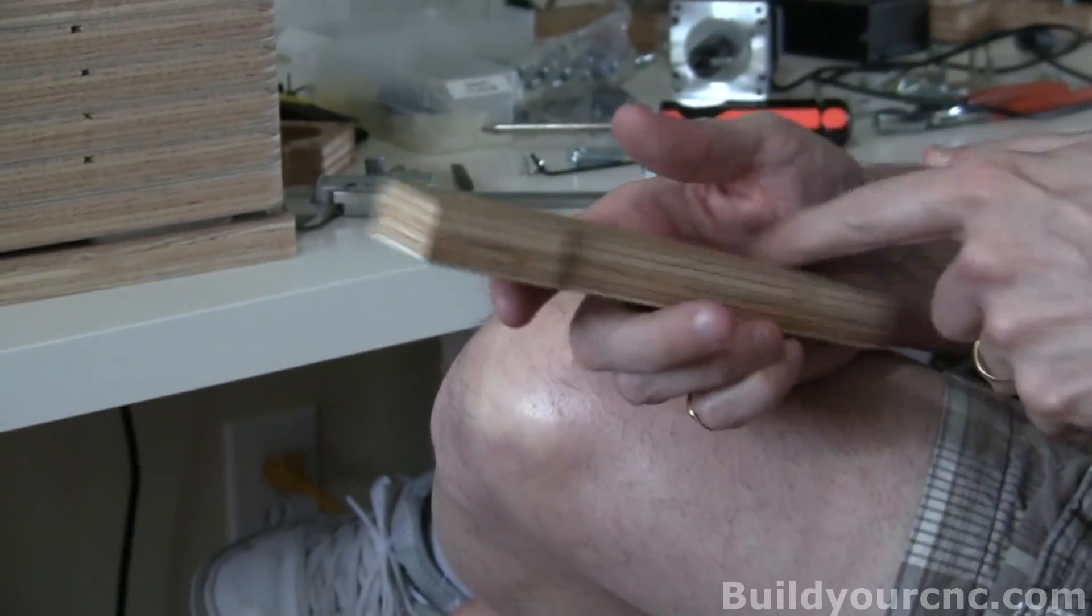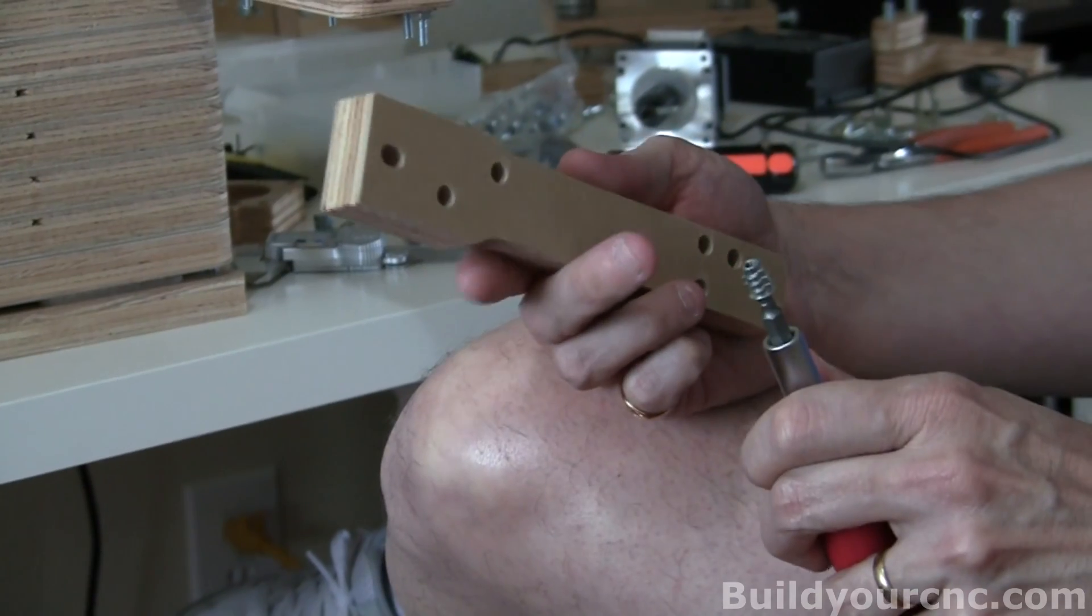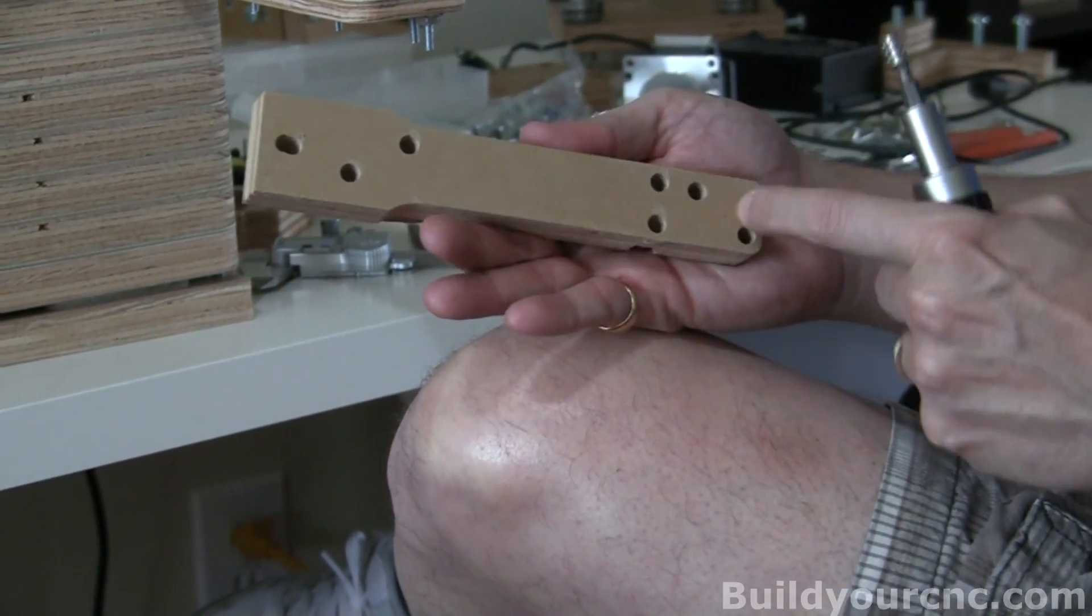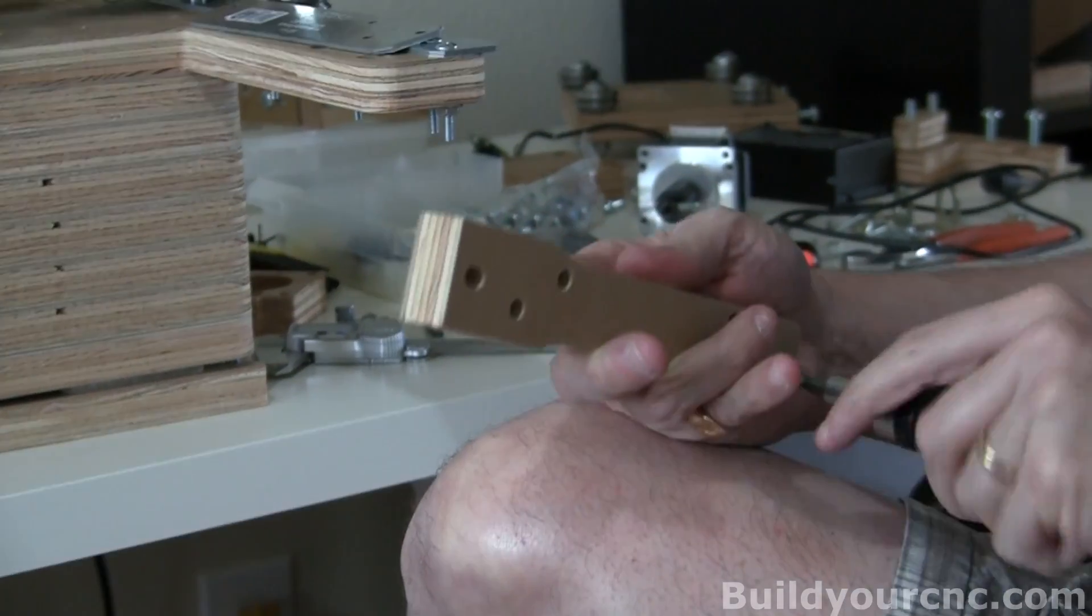To be able to put the rail on there, we need to add the number eight nut inserts. And it's going to be to these four holes. We need four number eight nut inserts.